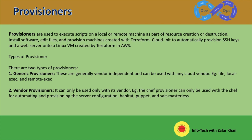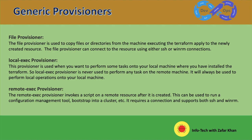We will discuss only the generic provisioner. These provisioners are generally vendor-independent and can be used with any cloud vendor. Examples are: file provisioner, local-exec provisioner, and remote-exec provisioner. The file provisioner is used to copy files or directories from the local machine executing terraform apply to a newly created resource. The file provisioner can connect to the resource using either SSH or WinRM connections.